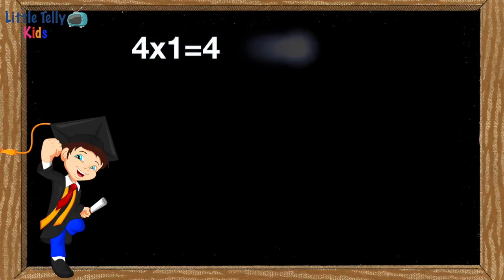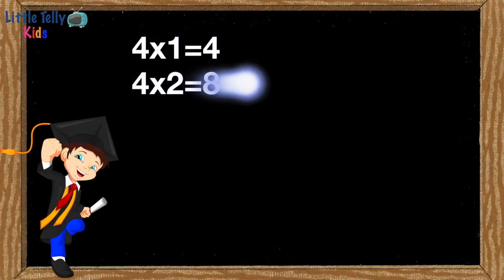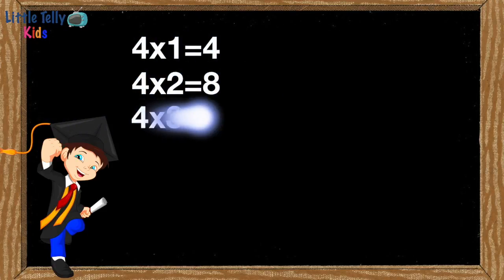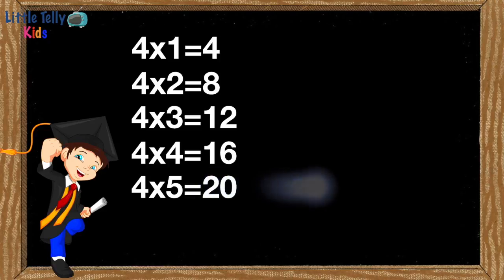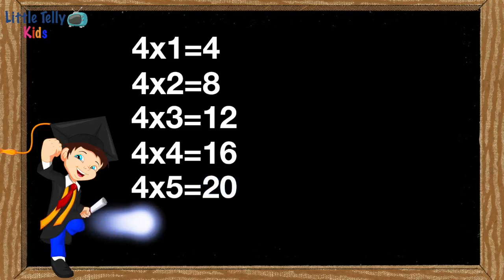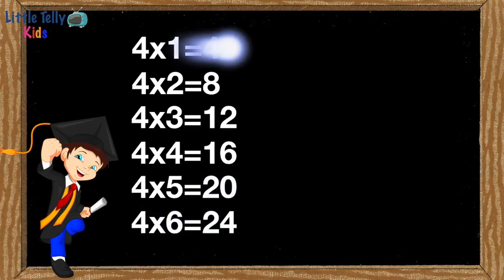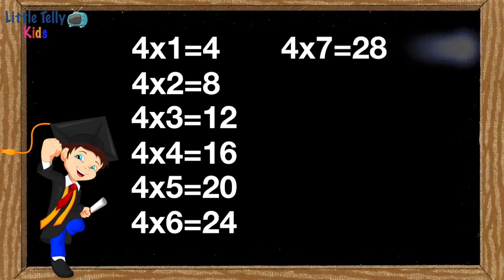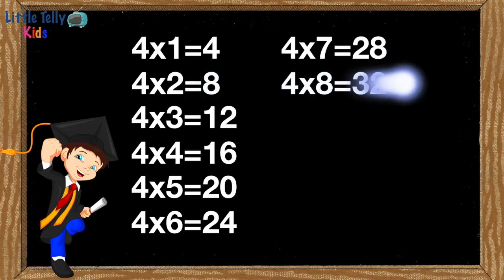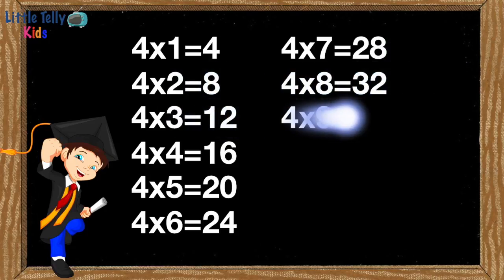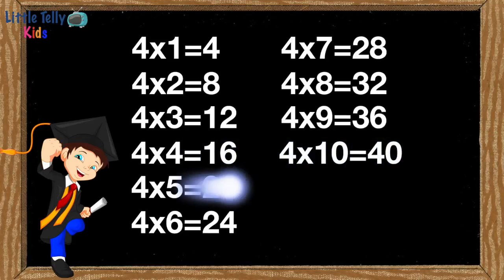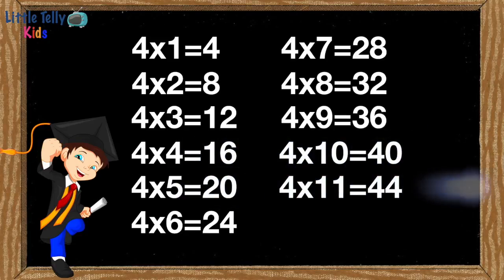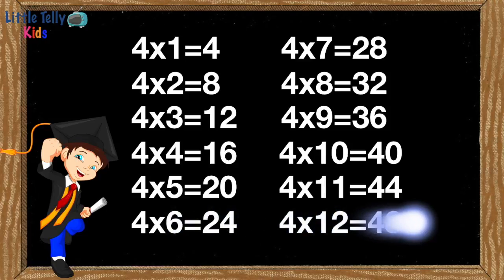4 1s are 4, 4 2s are 8, 4 3s are 12, 4 4s are 16, 4 5s are 20, 4 6s are 24, 4 7s are 28, 4 8s are 32, 4 9s are 36, 4 10s are 40, 4 11s are 44, 4 12s are 48.